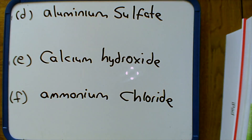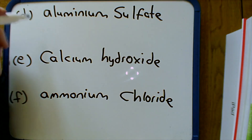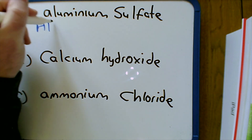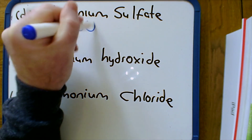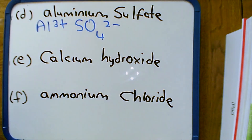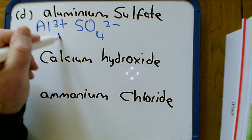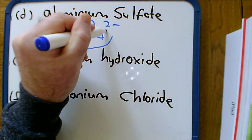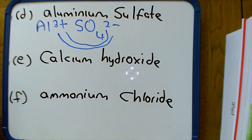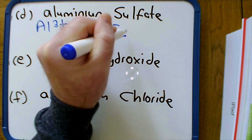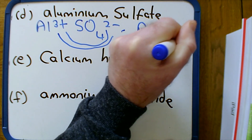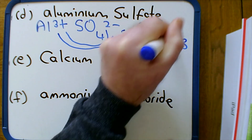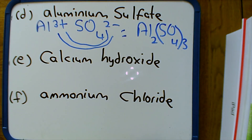For question D, aluminium sulfate: aluminium is Al3+ and sulfate is SO4 2−. The easiest approach is to swap the numbers over, giving Al2(SO4)3. The brackets are really important here — without them it would look like there are 43 oxygens, but we actually have three SO4 units.